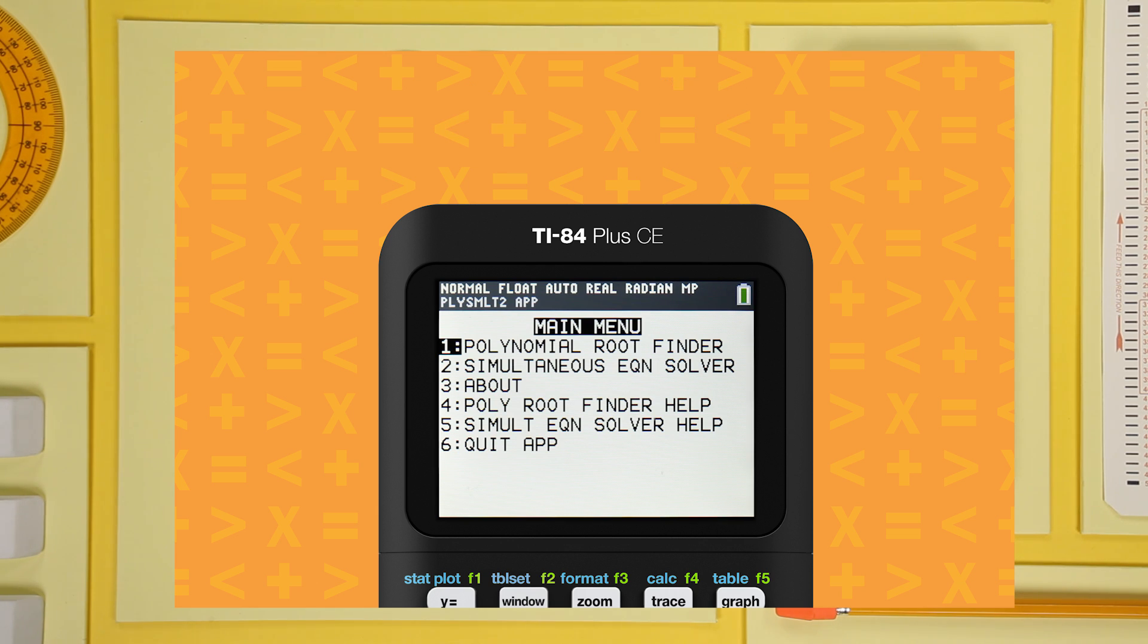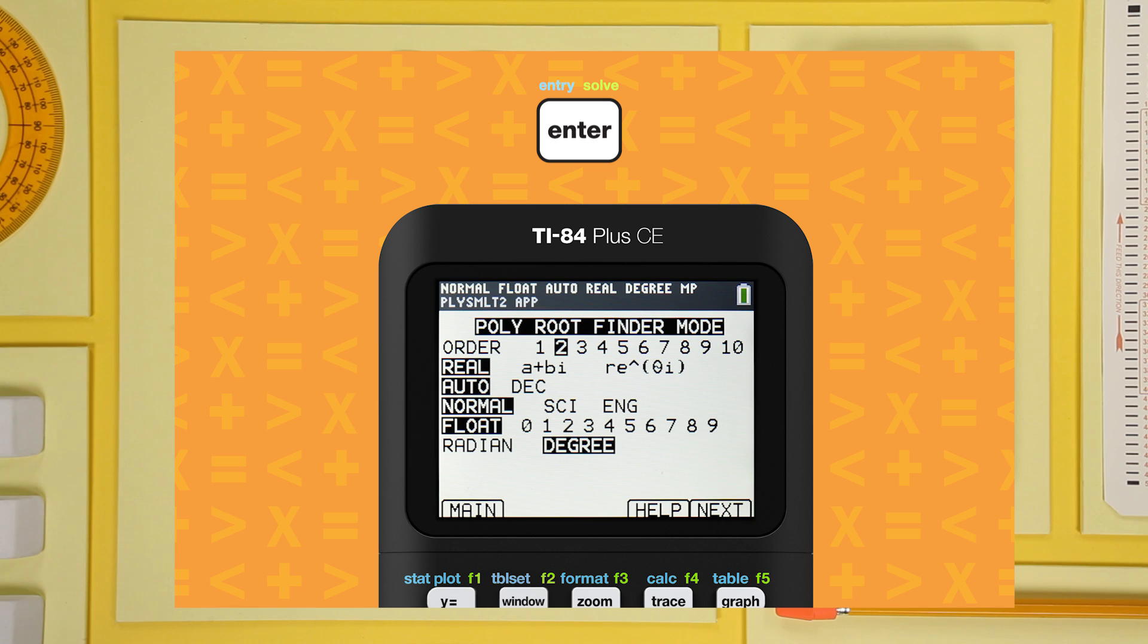Select polynomial root finder in the menu and enter. Arrow to a plus bi and enter. This enables your handheld to calculate imaginary solutions when needed. Now press graph.